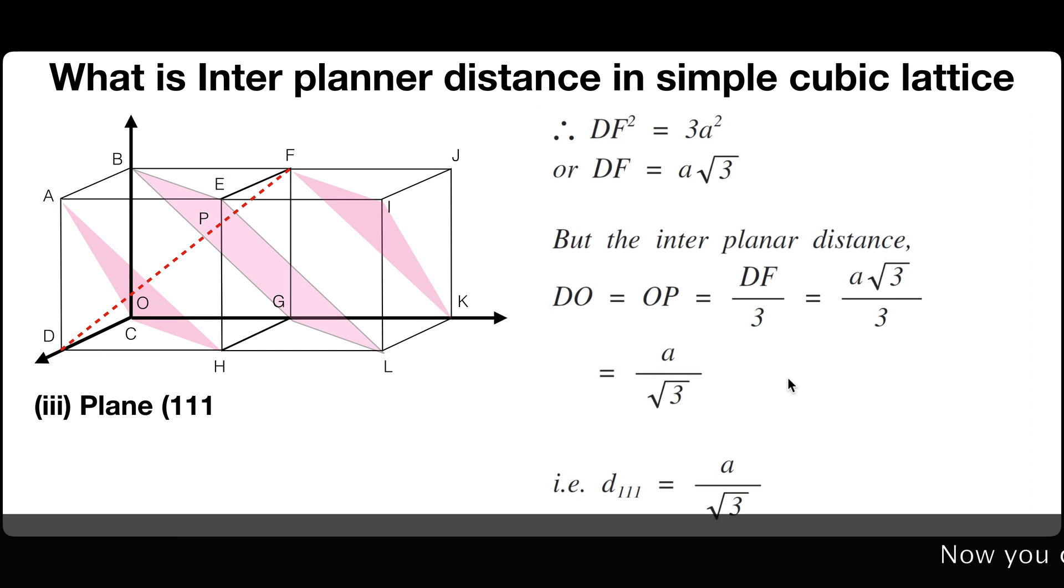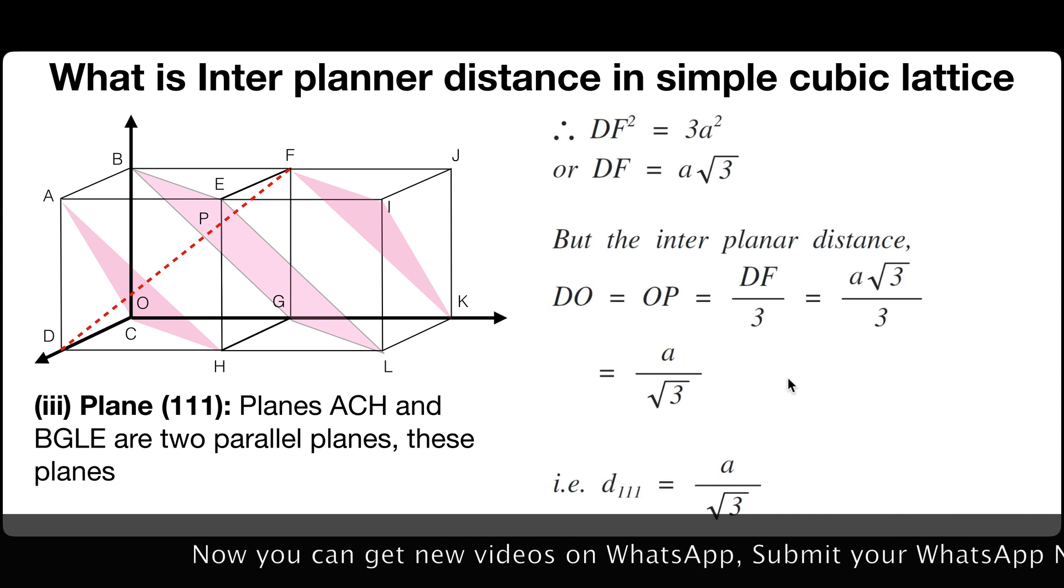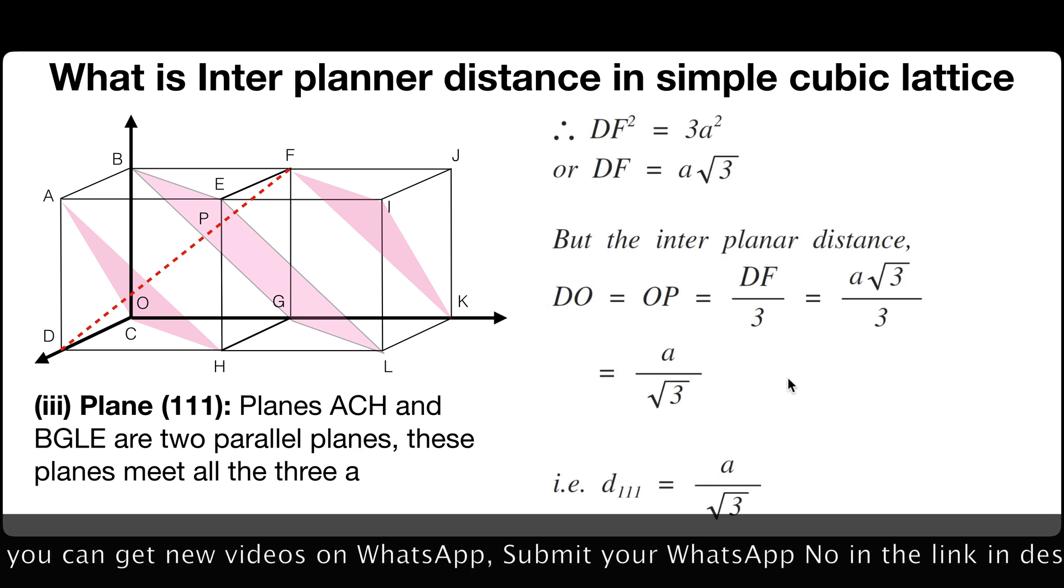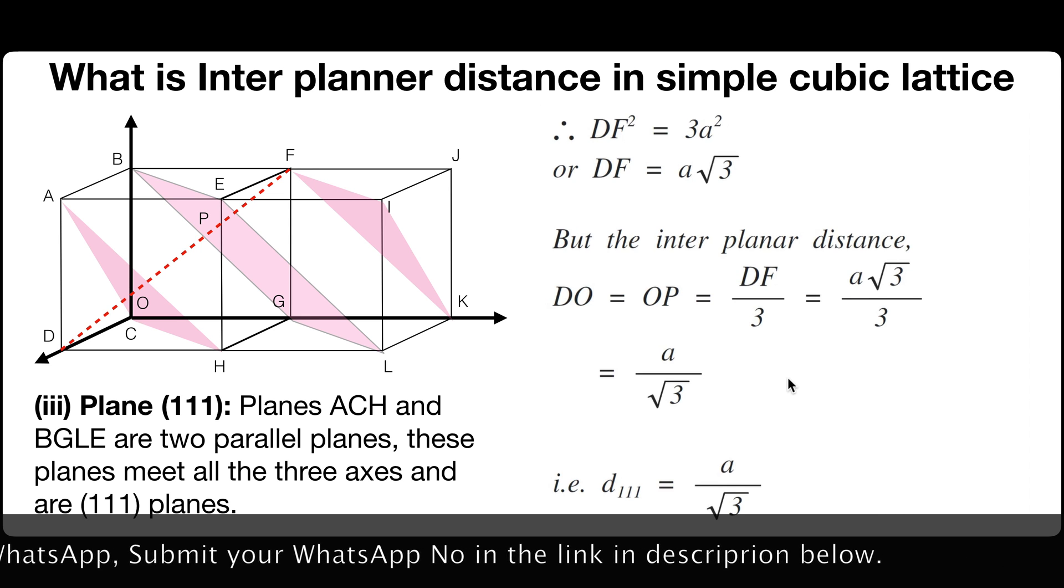Third, plane 111. Planes ACH and BGLE are two parallel planes. These planes meet all the three axes and are 111 planes.